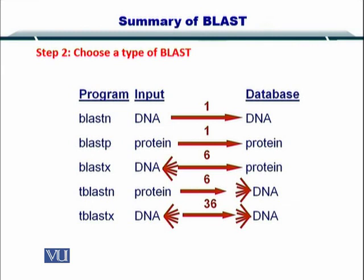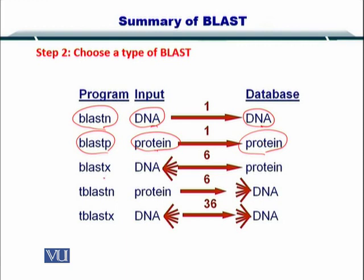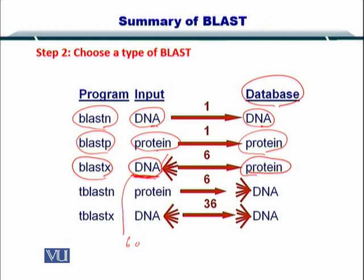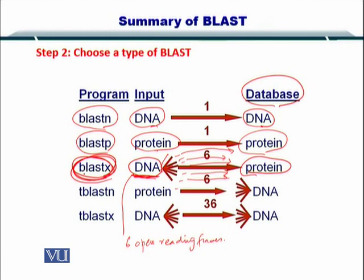To help you understand the importance of ORF: BLASTN has a DNA sequence on both sides, BLASTP has protein sequence on both sides, but BLASTX has a DNA sequence on the query side and a protein sequence on the database side. Since a DNA sequence can have six open reading frames, you need to create six different comparisons with the protein database. In this way, one BLASTX has a computational cost of six BLASTNs or BLASTPBs.